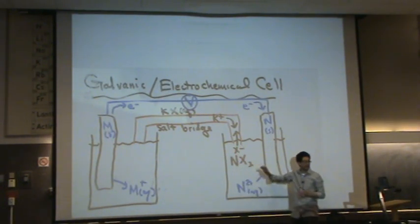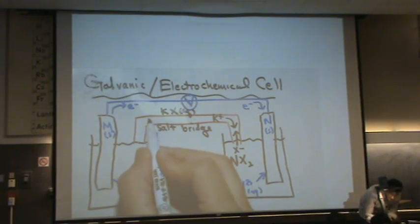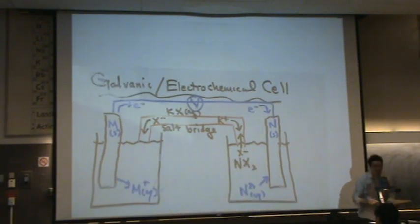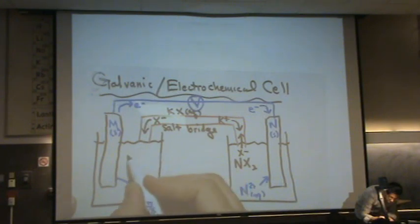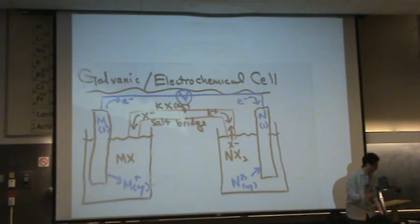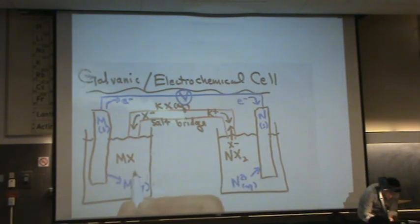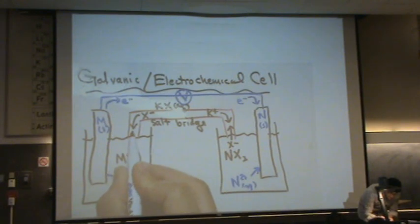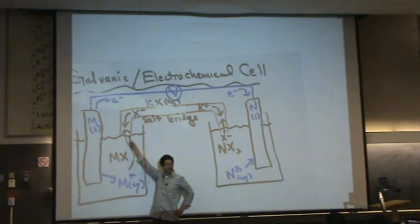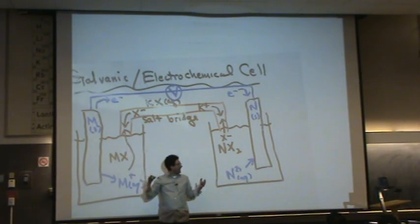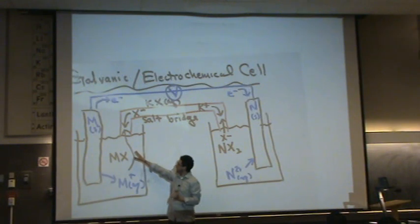On the other side, the X minus from the salt bridge travels this way towards the left hand side. And the metal, so this is made up of MX solution, but there's going to be a lot of extra M plus that goes up here. And that M plus, the extra positive charge, is going to meet this X minus over here. So that excess charge is taken care of in the salt bridge.